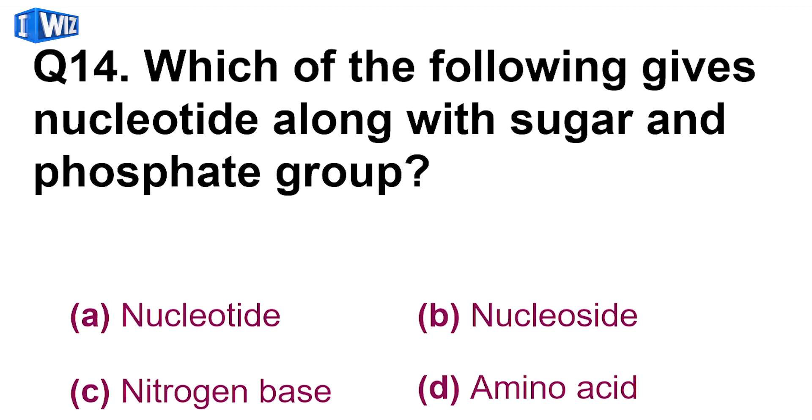Next is, which of the following gives nucleotide along with sugar and phosphate group? So nucleotide kub bantai hai, jab sugar, base, aur phosphate combine kerti hai. Is mein already sugar or phosphate group hai, toh nitrogenous base ki kumhi hai, jab woh mil jayega, aapko mil jayega nucleotide. So C is the correct answer.